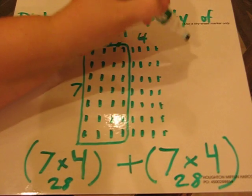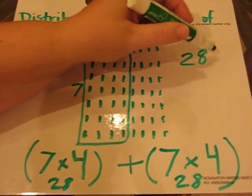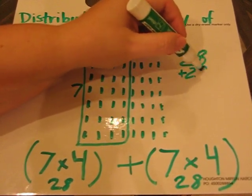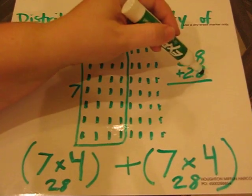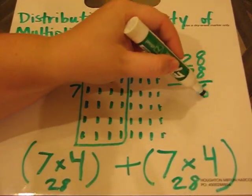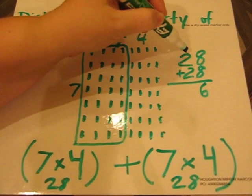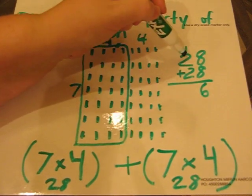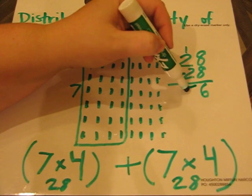So I add these two numbers together. 28 plus 28. 8 and 8 are in the ones place, so I have to add them together. That's 16. Carry my 1. 2 and 2 are in the tens place. 2 plus 2 is 4 plus one more is 5.